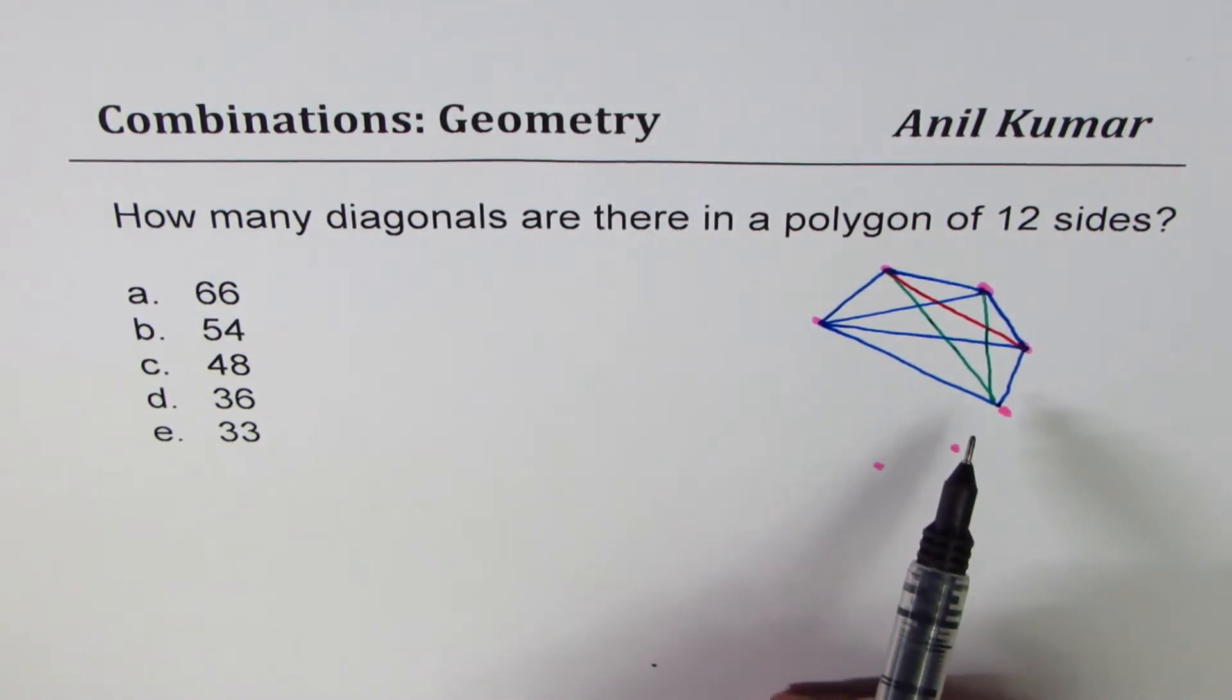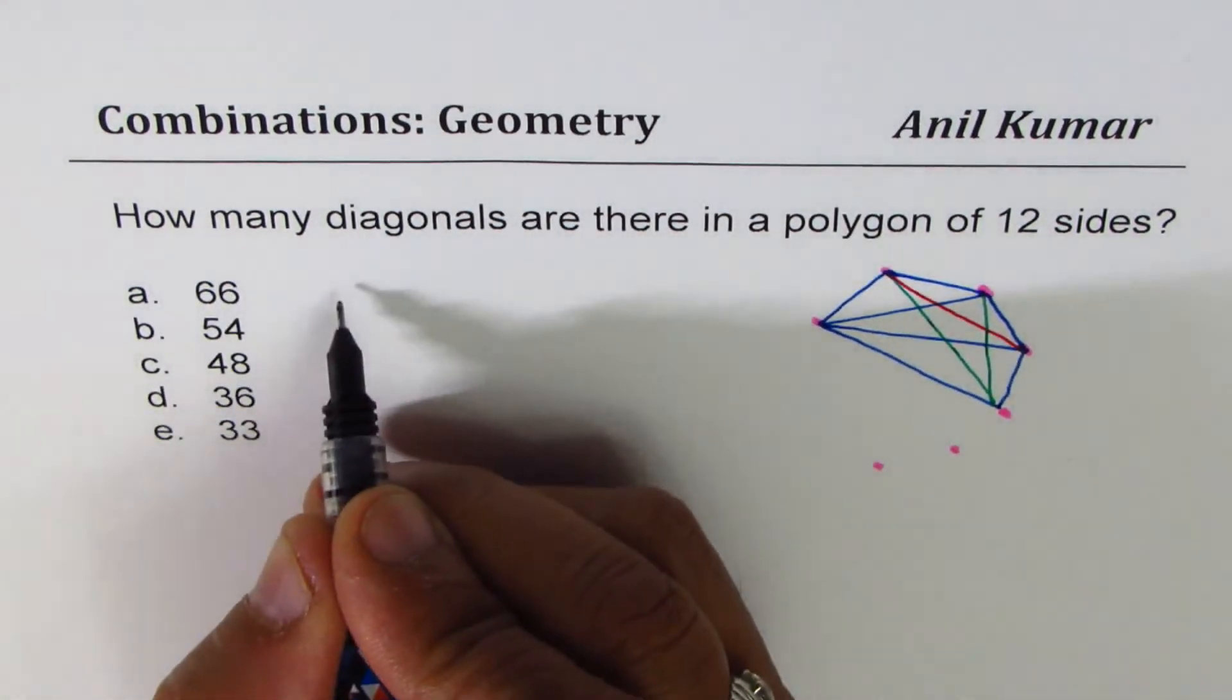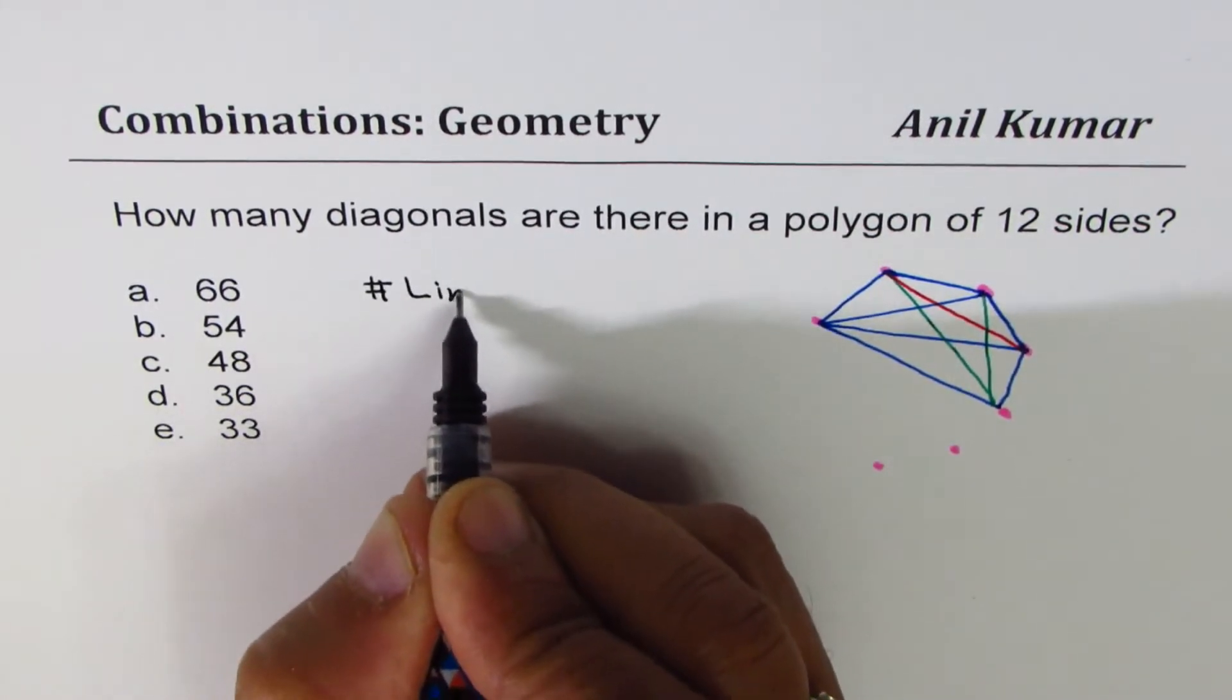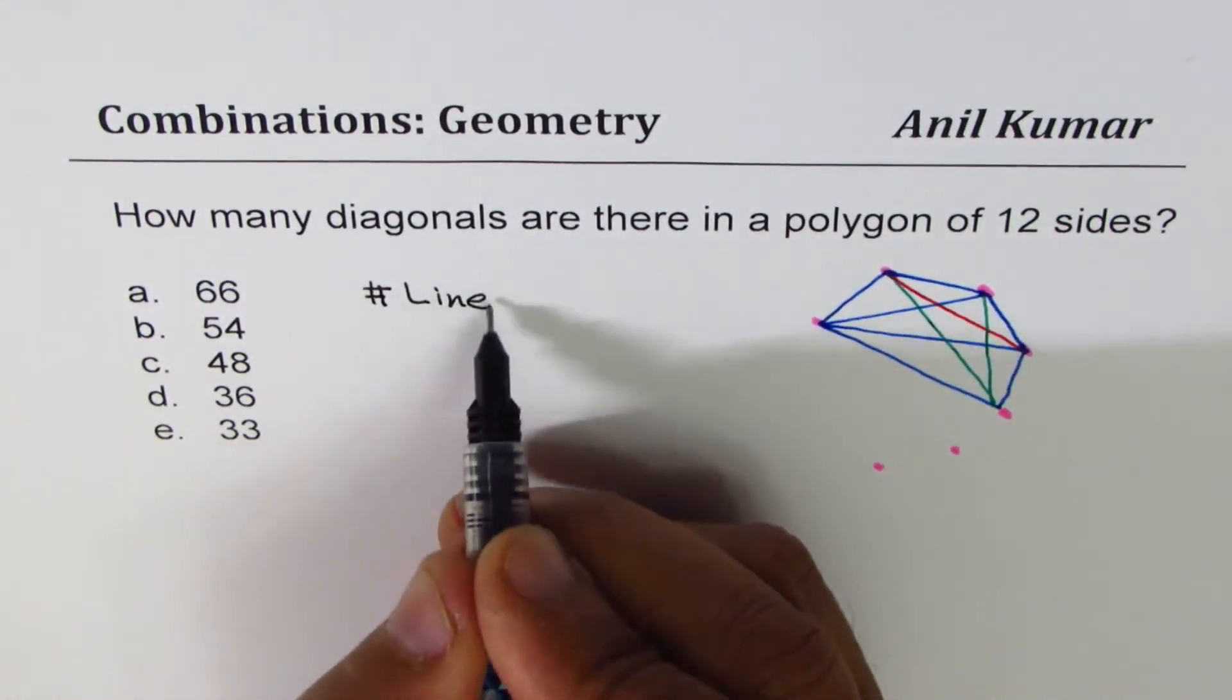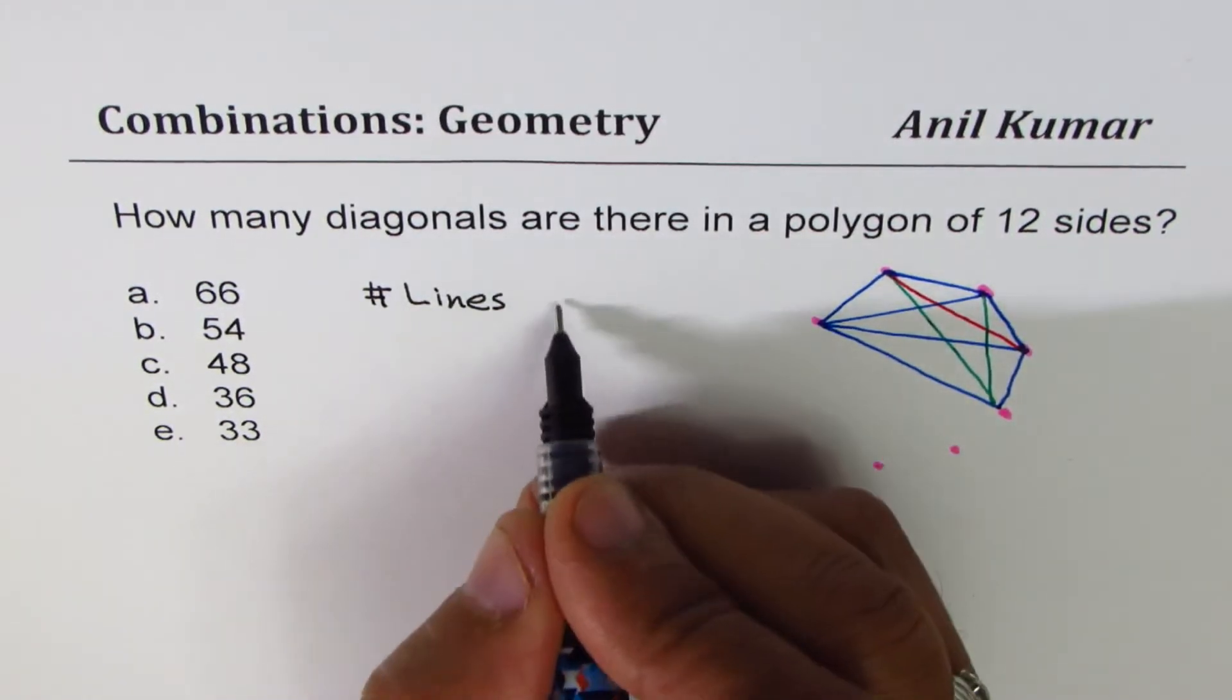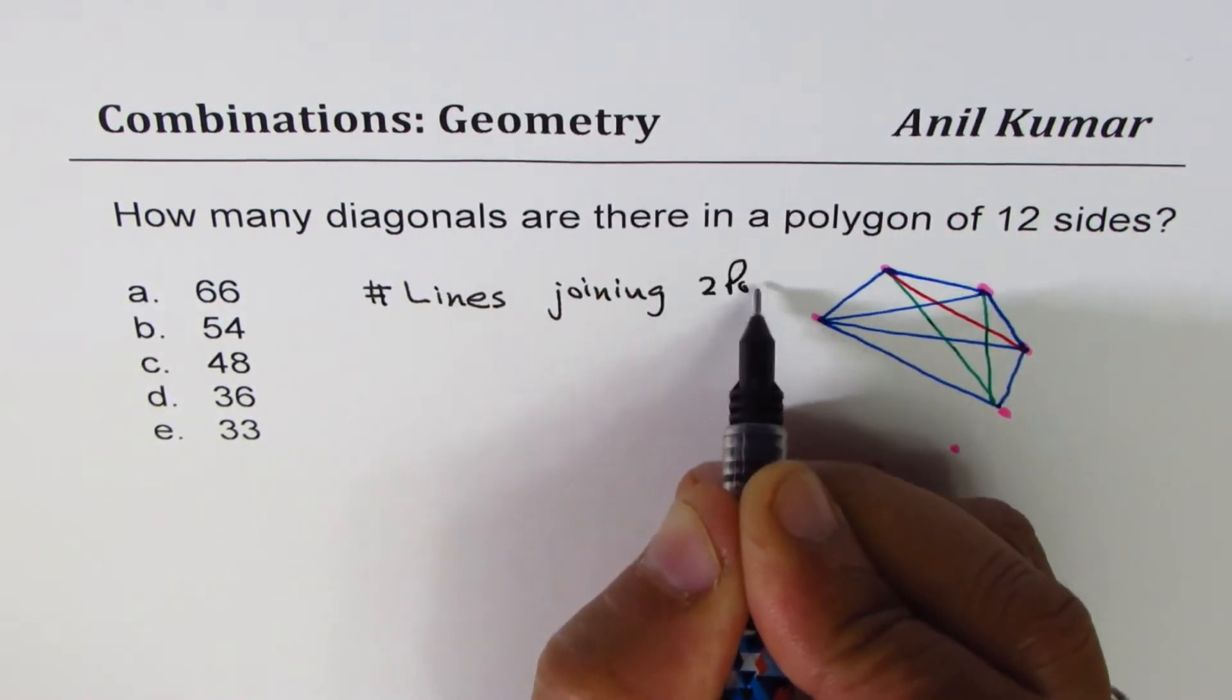How do you get lines? That is what we're thinking about. So we say number of lines could be formed with two points. Number of lines is joining points, right? Joining two points.